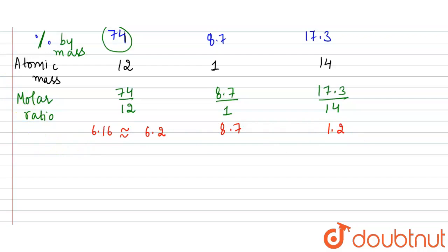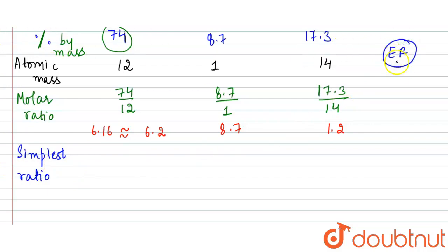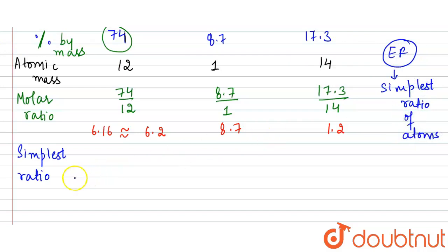Now we will calculate the simplest whole number ratio. We do this because the empirical formula is defined as the simplest ratio of atoms present in a compound. To find this, the molar ratios are divided by the smallest value among them.